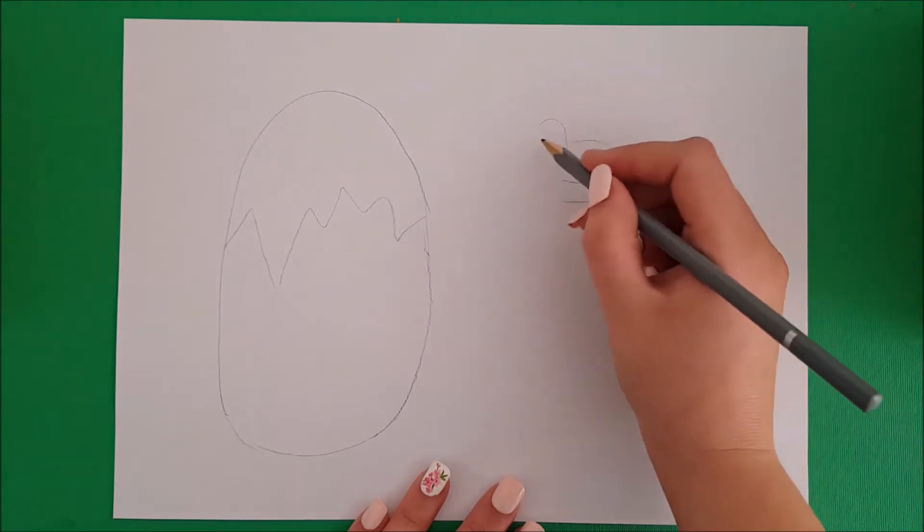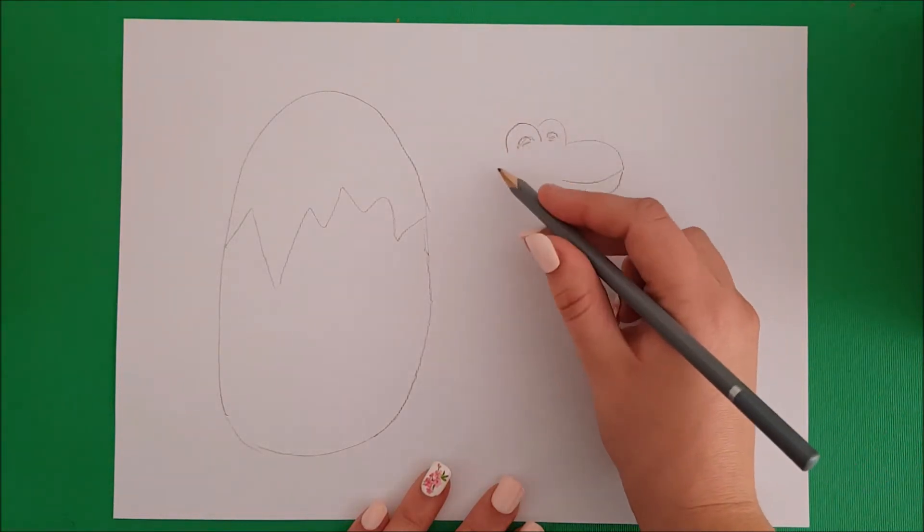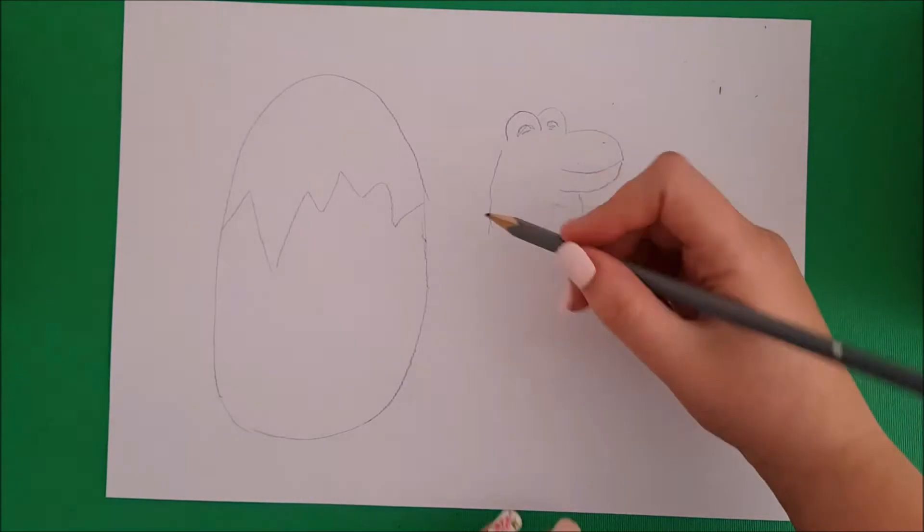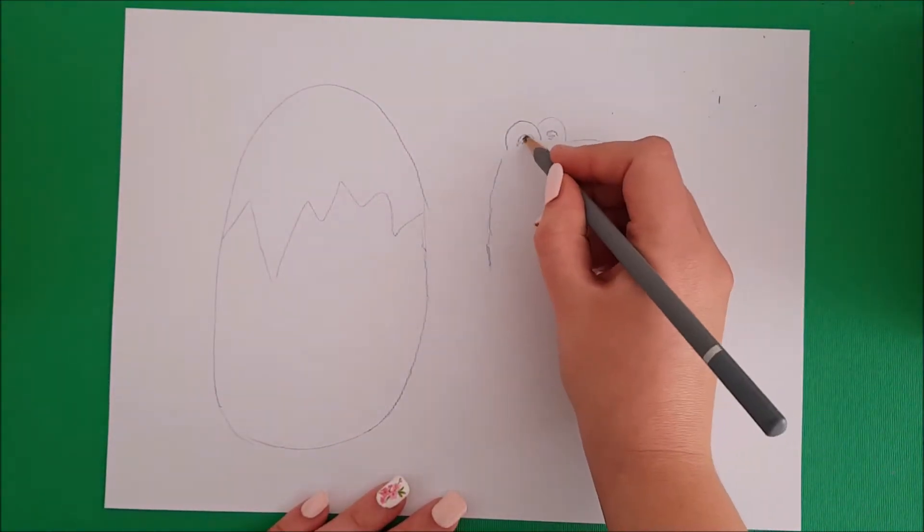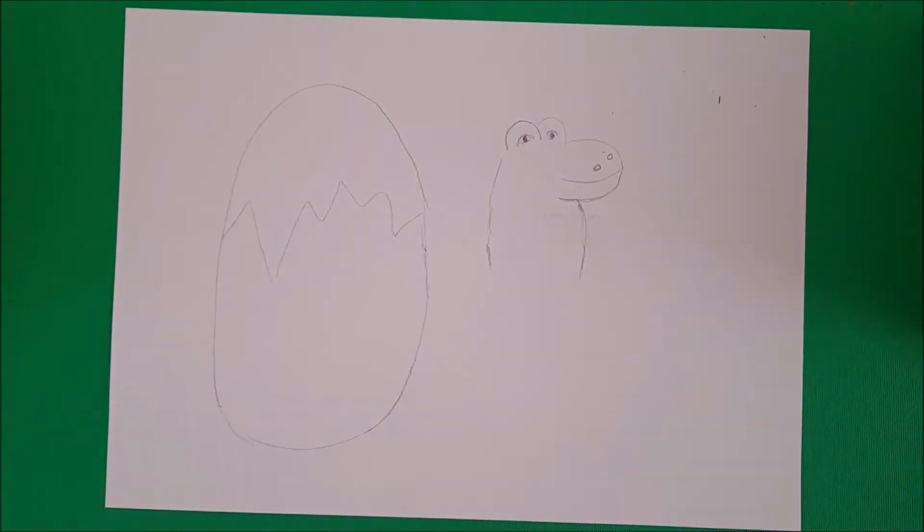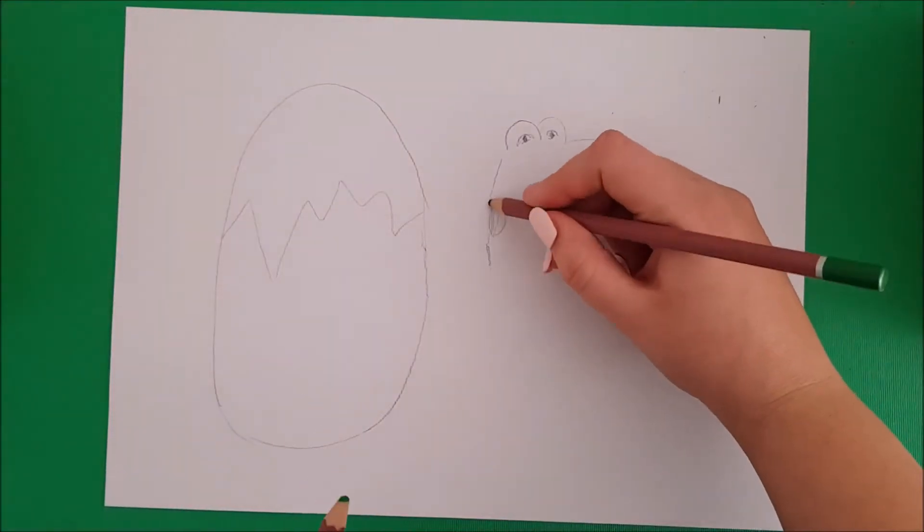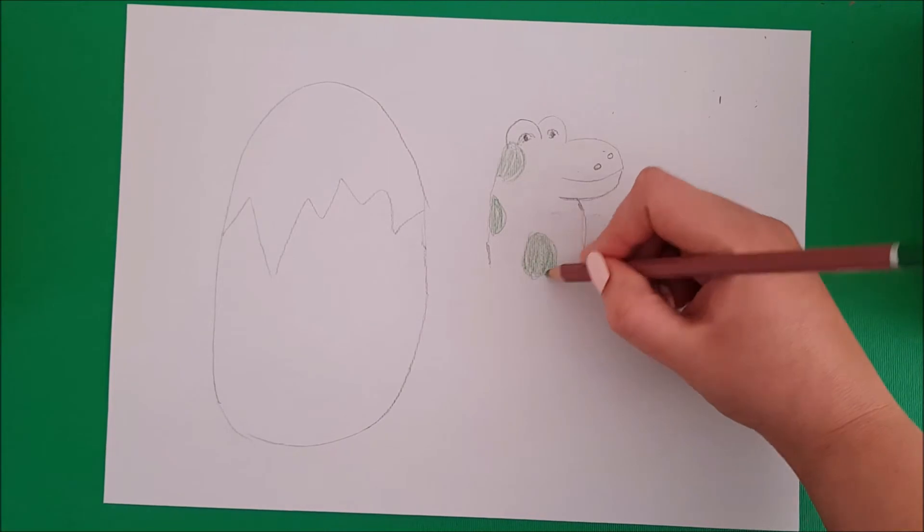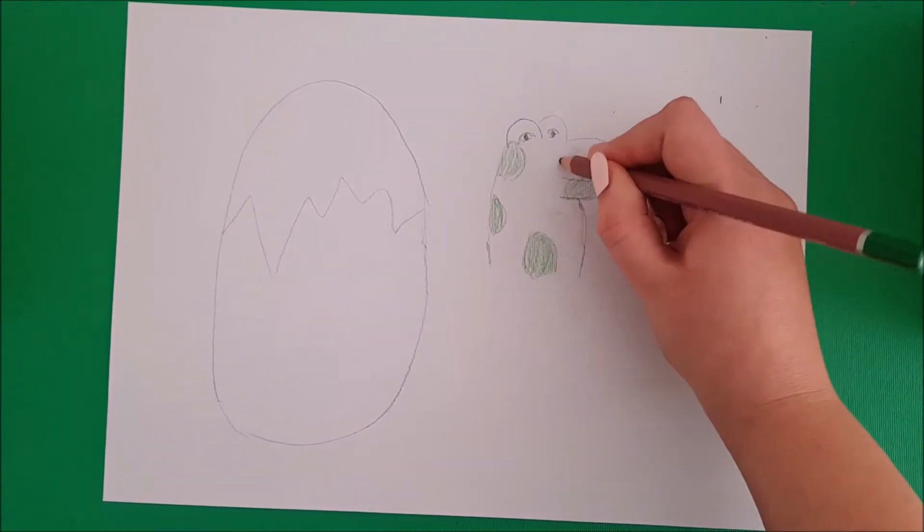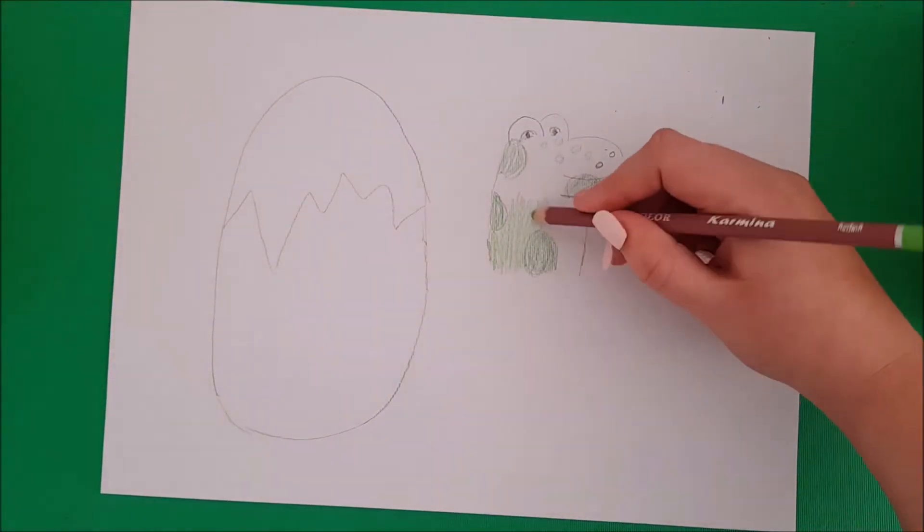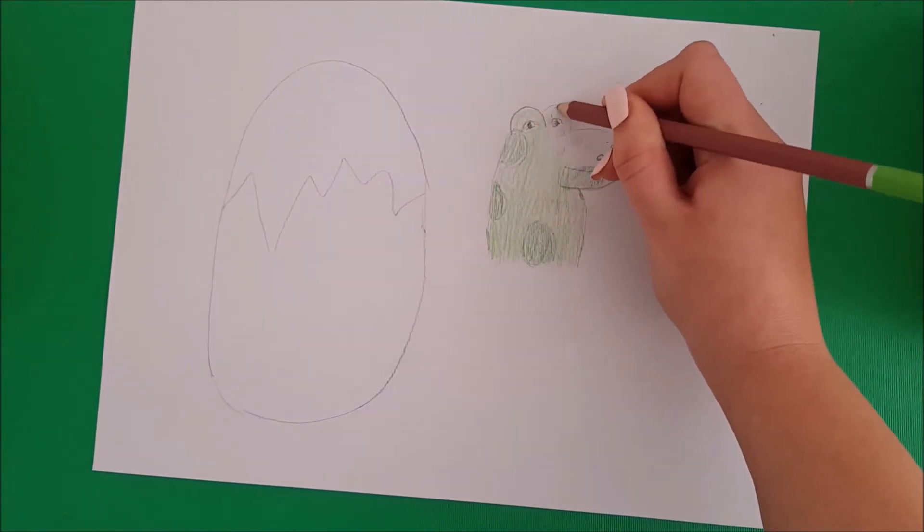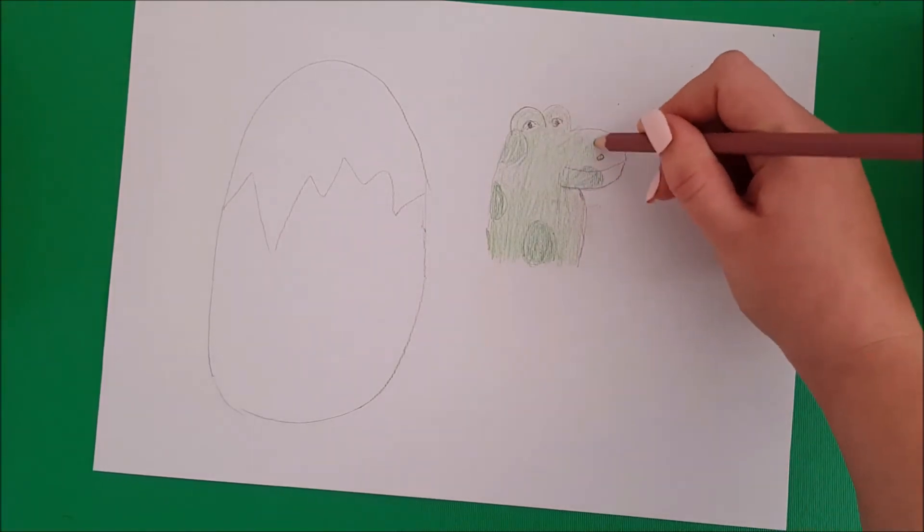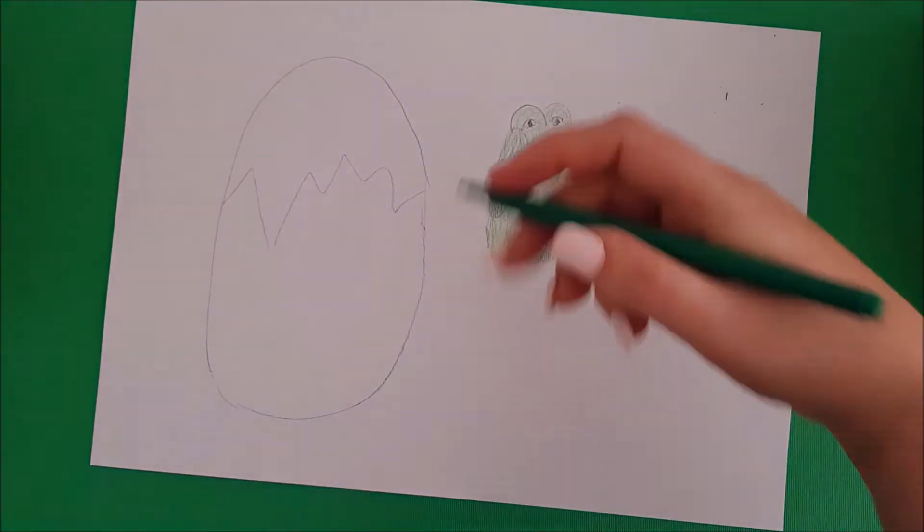Next to your egg, draw the head of your baby dinosaur. Color and decorate your dinosaur. My dinosaur is going to have green polka dots. You can also outline it with marker.